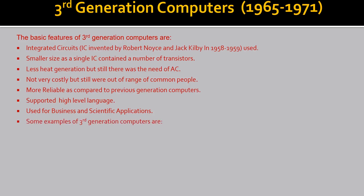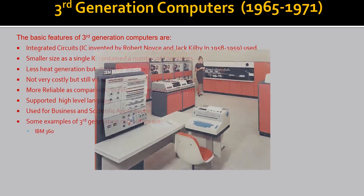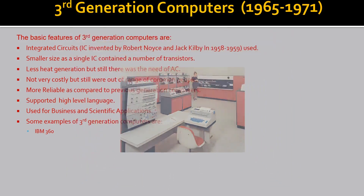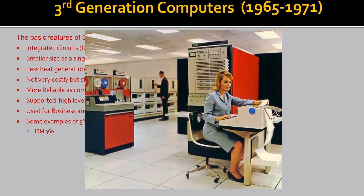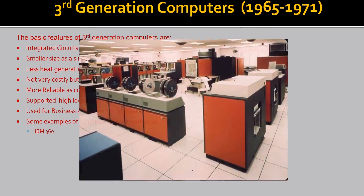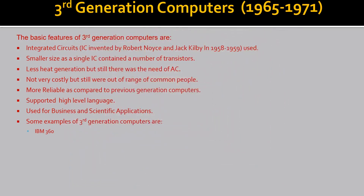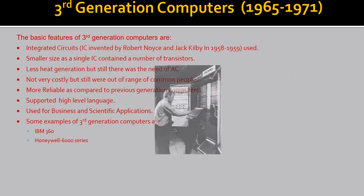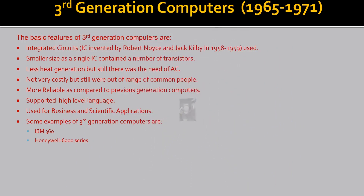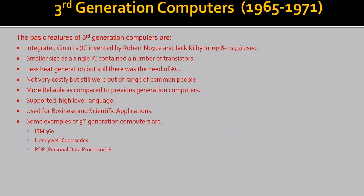Let's go through some examples of 3rd generation computers: IBM 360, Honeywell 6000, and PDP — Personal Data Processor 8.